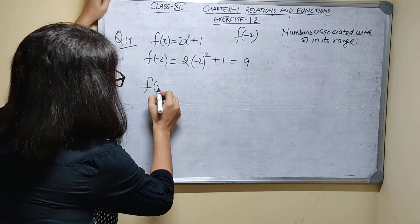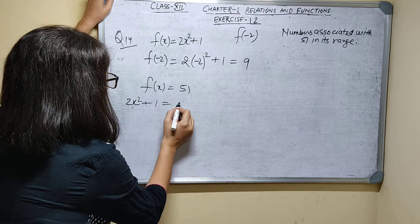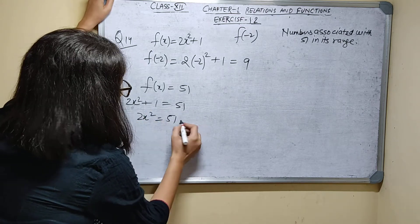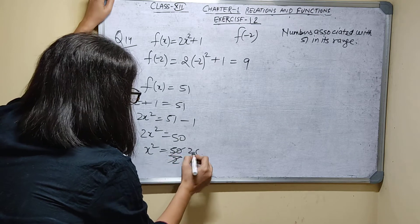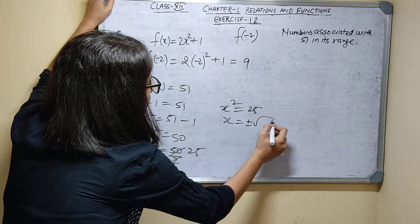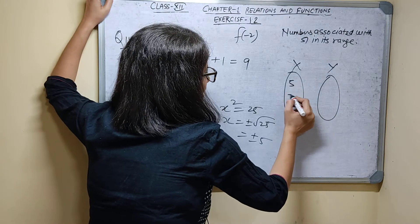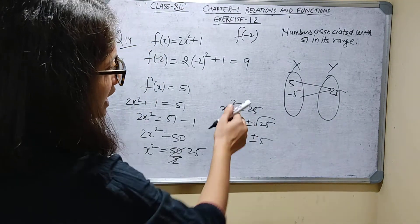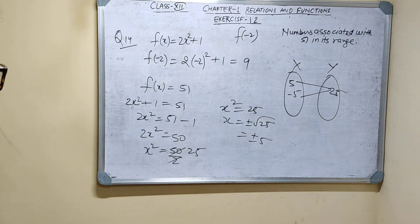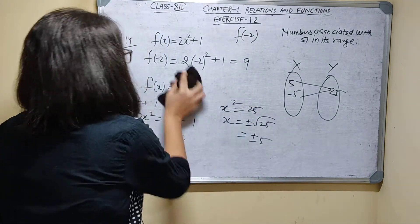For numbers associated with 51 in its range: set f(x) = 51, so 2x squared plus 1 = 51, giving x squared = 25. Therefore x = plus or minus root of 25, which is plus or minus 5. So both +5 and -5 are associated with 51.